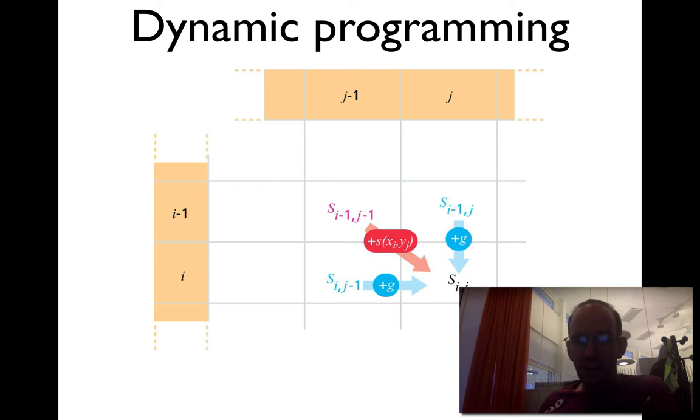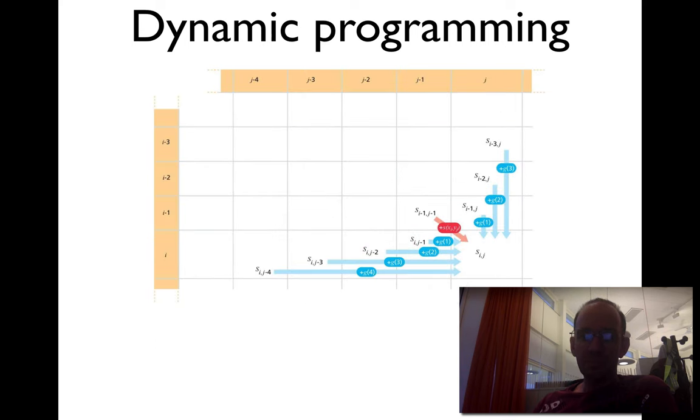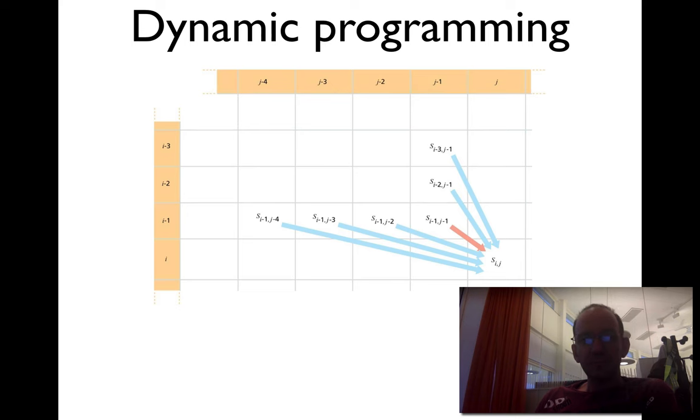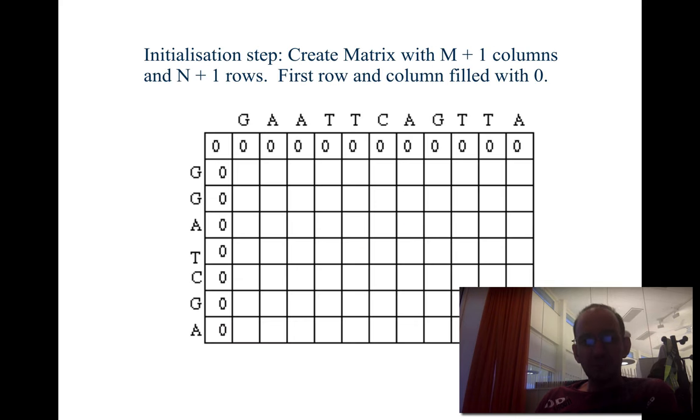If you take the diagonal path, you add the score of aligning residues i and j, which is from the substitution matrix I told you about before. On the other hand, if you take the other paths, you have to add the cost of the gap. That means you make a gap in this particular part of the matrix. You can even have longer gaps depending on the length. Let's do an example.